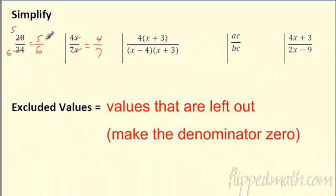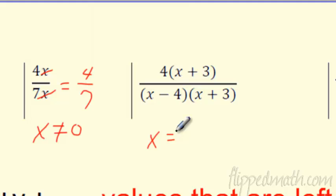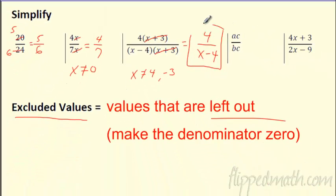It's just like simplifying fractions — now I'm putting some variables in there. When we do that, we have to be careful with excluded values — values that are left out. So in this case, I have to say that x is not allowed to equal zero. Why? Because if it did, you'd be dividing by zero — we can't do that, that's a vertical asymptote. So even though I cross it out to reduce it, I have to say x can't equal zero. Looking at the next example, x can't equal four or negative three, because that would make the bottom zero. Does anything cancel? Sure, this cancels this — only because it's around multiplication. So this is four over x minus four. Even though in my simplified version x can't be four, x also can't be negative three — you would never know that from the simplified form. So we have to make sure we address the excluded values.